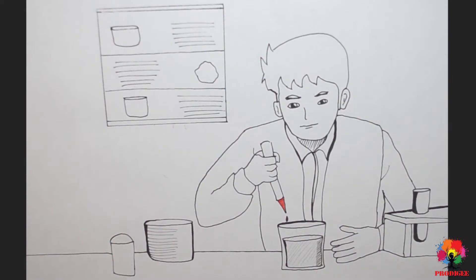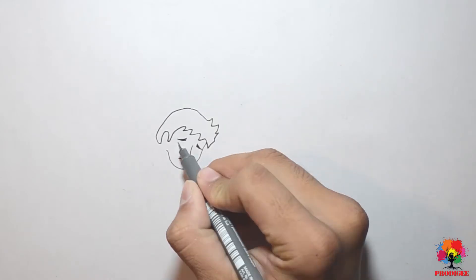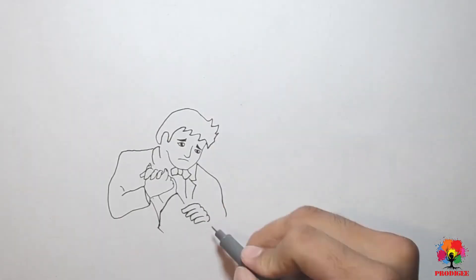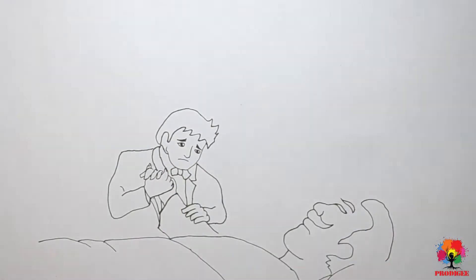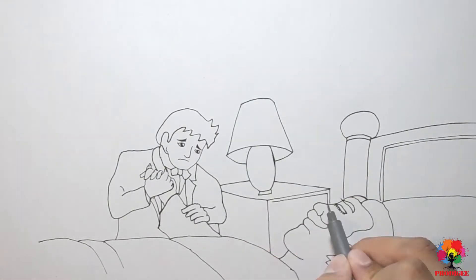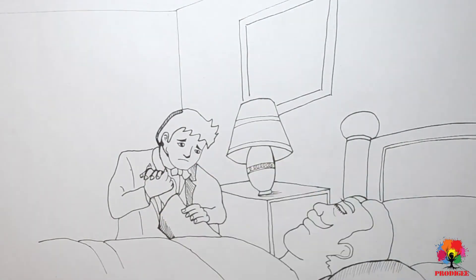He worked under a chemist, and on 3rd of September 1864, an accident took place in a factory of Stockholm where due to an explosion of nitroglycerin, five people died, including Nobel's younger brother.